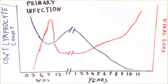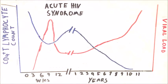After a few weeks, the body starts to fight back by producing anti-HIV antibodies. This is known as seroconversion. This leads to a decrease in the viral load and an increase in the CD4 cells. During this time, people may experience acute HIV syndrome, which often feels like a very bad case of the flu.